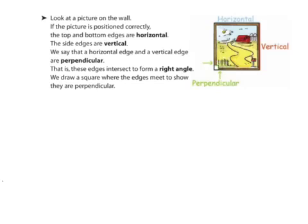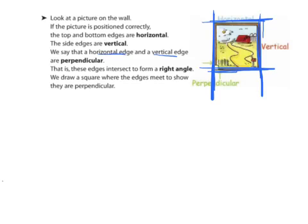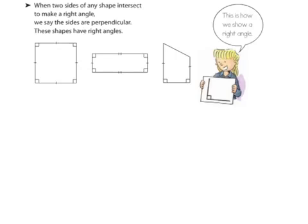Now let's use some of our vocabulary to describe this picture on the wall. If the picture is positioned correctly — not crooked, when it's straight — both the top and the bottom edges are horizontal. The side edges are vertical. We could say that the horizontal edge and the vertical edge, where they meet, is perpendicular — it gives us that right angle. We could say that the horizontal edges are parallel, and the vertical edges are parallel. When two sides of any shape intersect and make a right angle, they are perpendicular. All of these shapes have perpendicular sides — they have a right angle, which is an L-shaped corner.